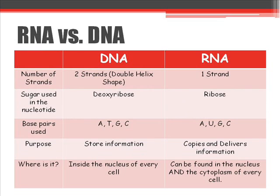And now the new stuff. The same information from the last slide is in the middle column, but now you can compare that with RNA on the far right-hand column. RNA is just single stranded — there is no double helix, just one strand of information. Instead of deoxyribose, RNA uses ribose. Base pairs used in RNA are A, U, G, and C. The purpose of RNA is that it copies and delivers information. You can find RNA in the nucleus of every cell and in the cytoplasm of every cell.